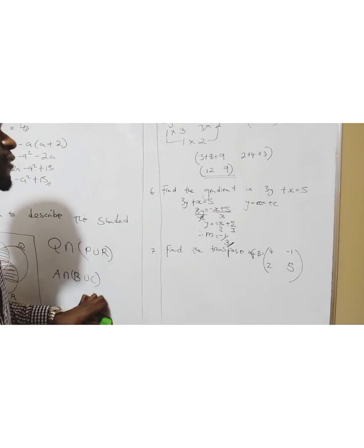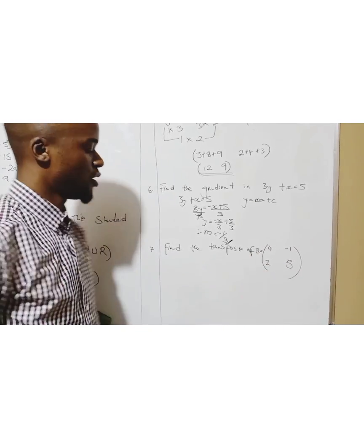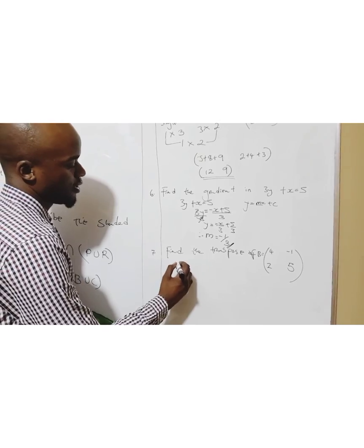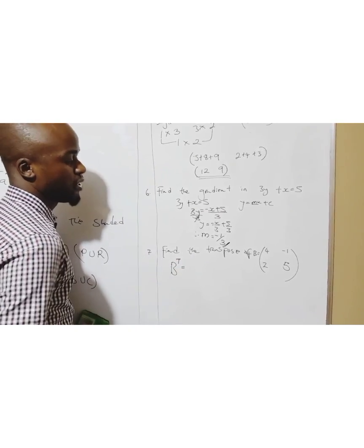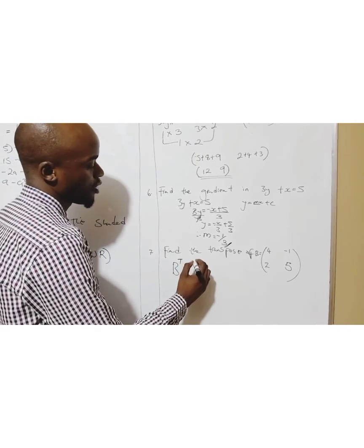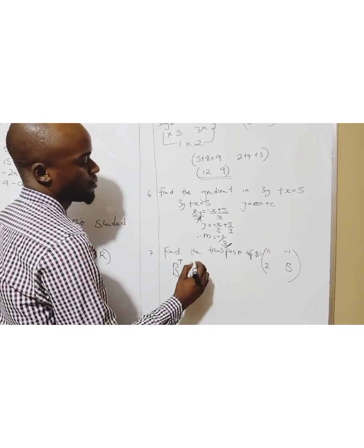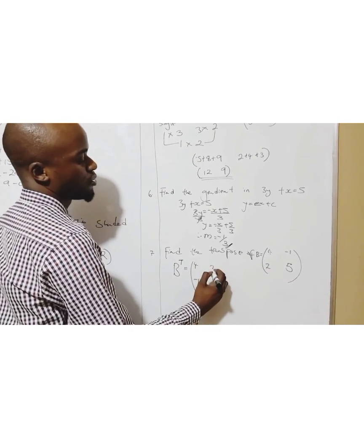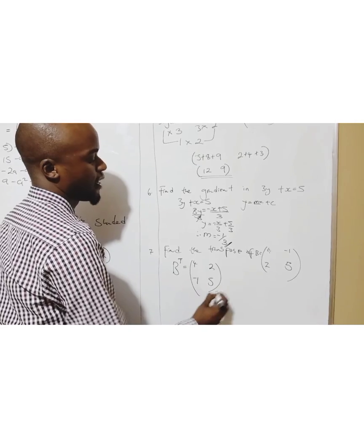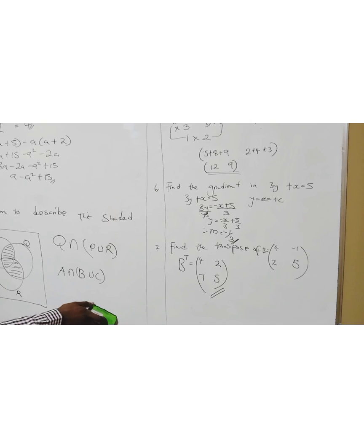Question seven: find the transpose of B. Transpose means turning a row into a column. Have you seen this row becomes a column: 4, -1. This row becomes a column: 2, 5. You're done. These are only one mark.